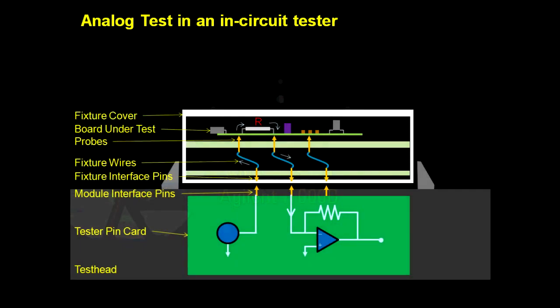In a typical in-circuit test setup, probes and wires connect the device under test to the measurement circuit on the tester.